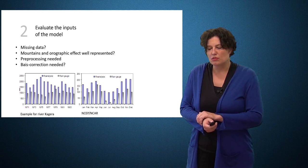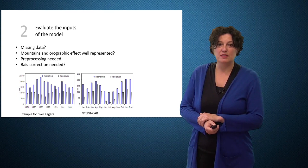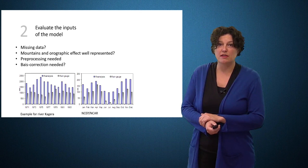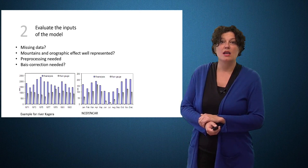The second commandment deals with the fact that you should more closely look at this data and evaluate it. Are there missing data? Are the mountains and orographic effects well represented? Is there any preprocessing needed? Do we need a bias correction? Because a biased rainfall will lead to imbalanced hydrological mass balances and errors in all fluxes.